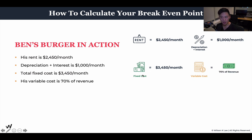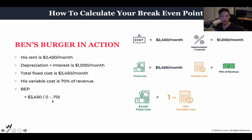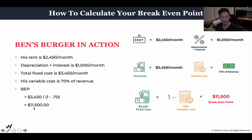Now that we've figured out the fixed costs, it's time to figure out the variable cost. We set a budget of 70% of revenue as the variable cost — the maximum percentage it should be of revenue. So now we can calculate the break-even point. The formula is: fixed costs divided by one minus 0.7. That gives us $3,450 divided by 0.3.